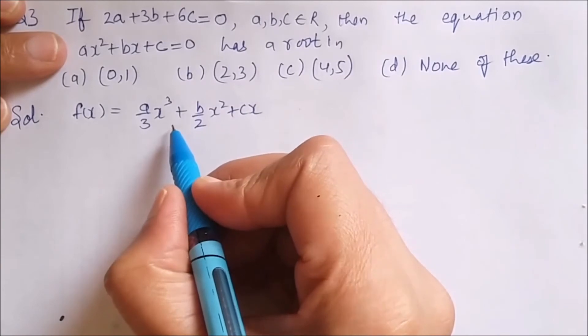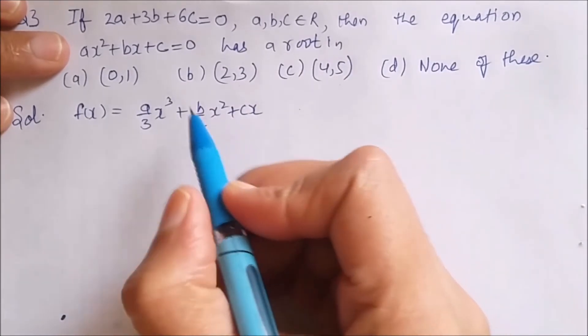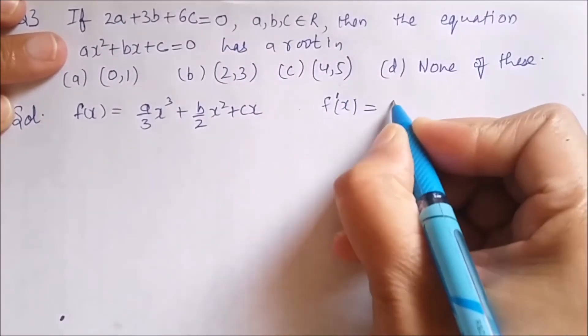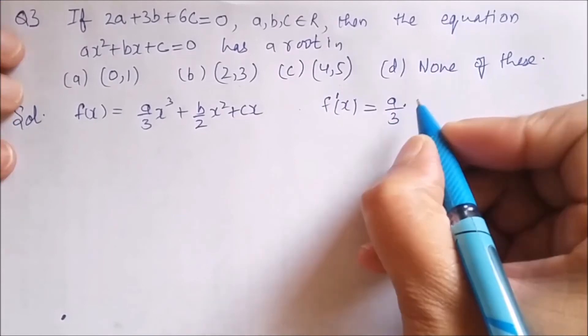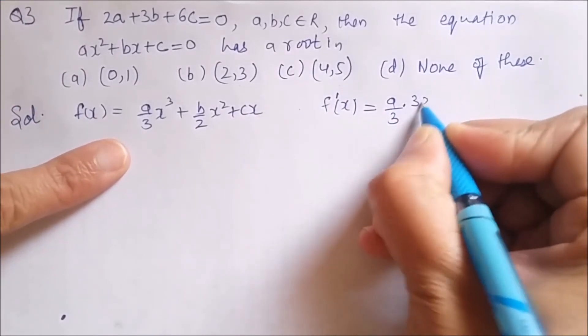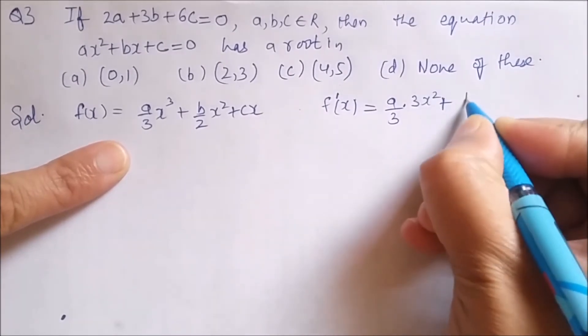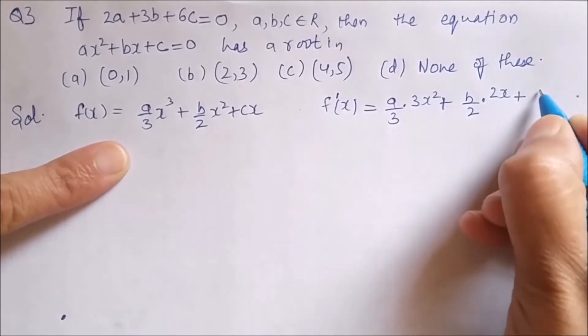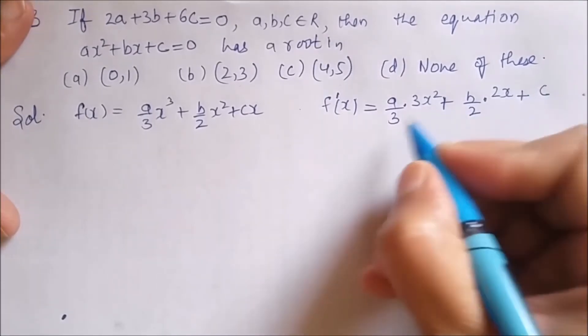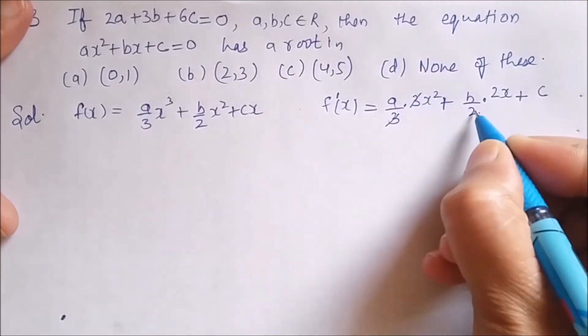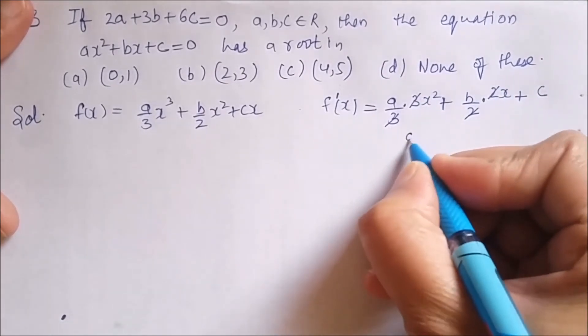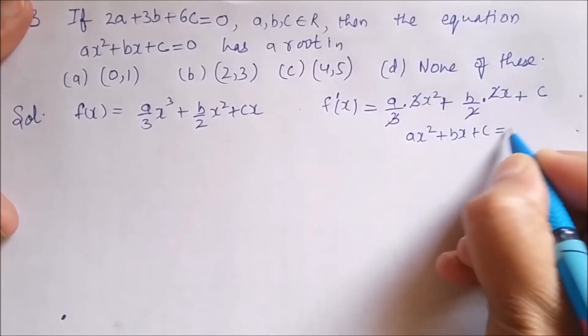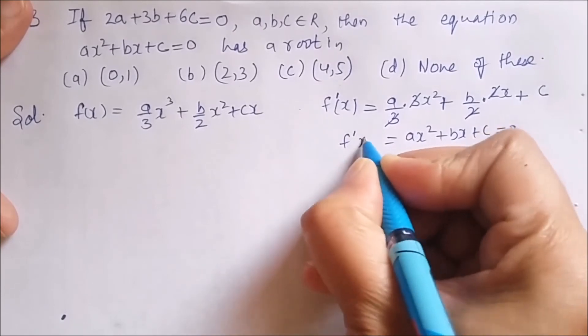I choose this function because if we differentiate this function f'(x) will be same as this one. f'(x) = (a/3) × 3x² + (b/2) × 2x + c. Now this 3 and this 3 will go. This 2 and this 2 will go. And I will be left with the equation ax² + bx + c and this is given to be 0. So f'(x) = 0.